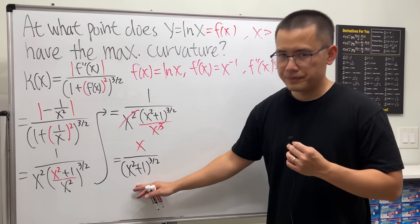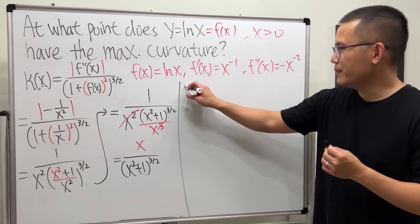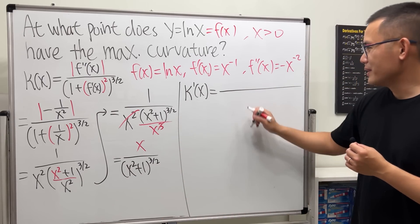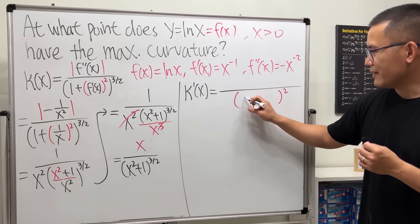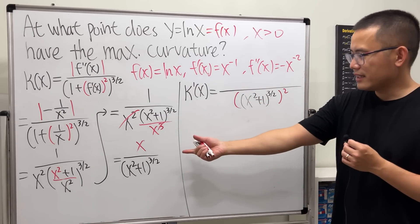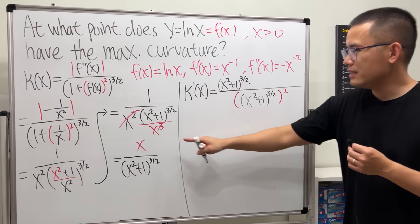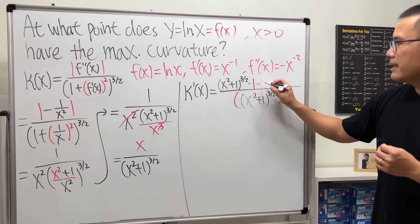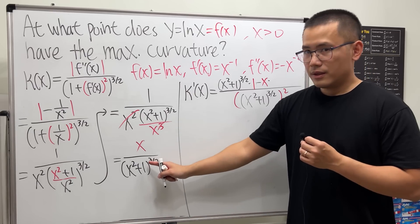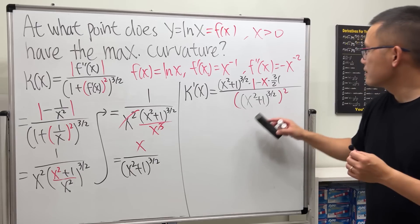This is the curvature in terms of x. To find the maximum, we need the derivative of kappa. Using the quotient rule: the denominator squared is (x² + 1)^(3/2) squared. We take the bottom function (x² + 1)^(3/2) times the derivative of the top, which is 1, minus the top function times the derivative of the bottom. Bringing the power to the front gives 3/2.